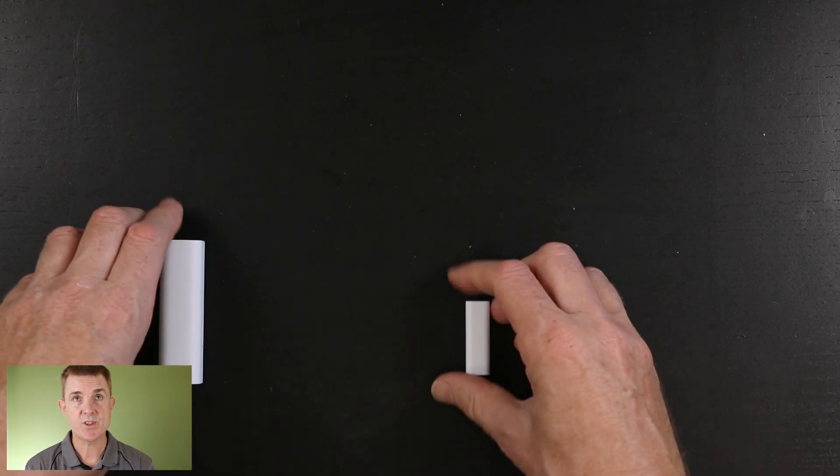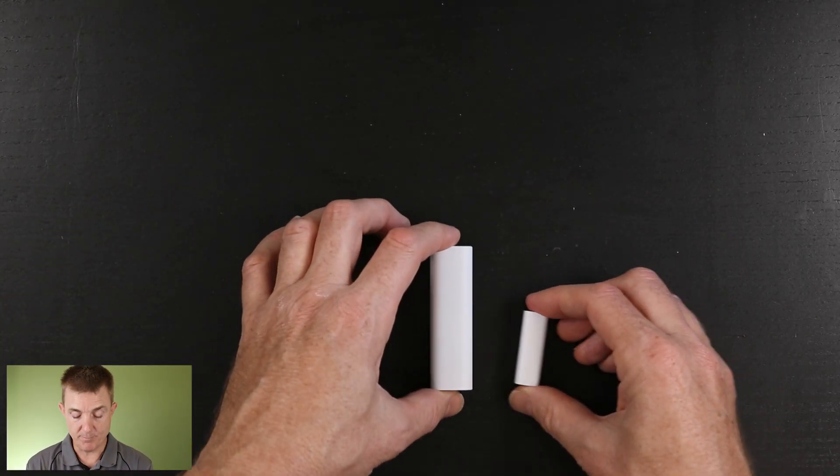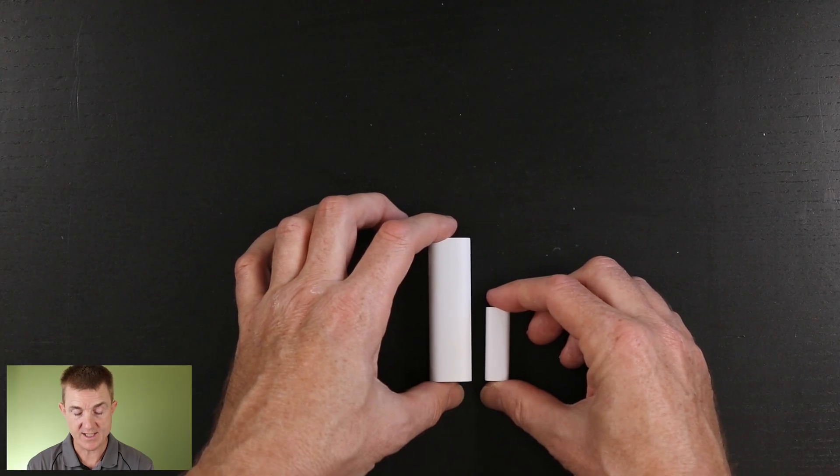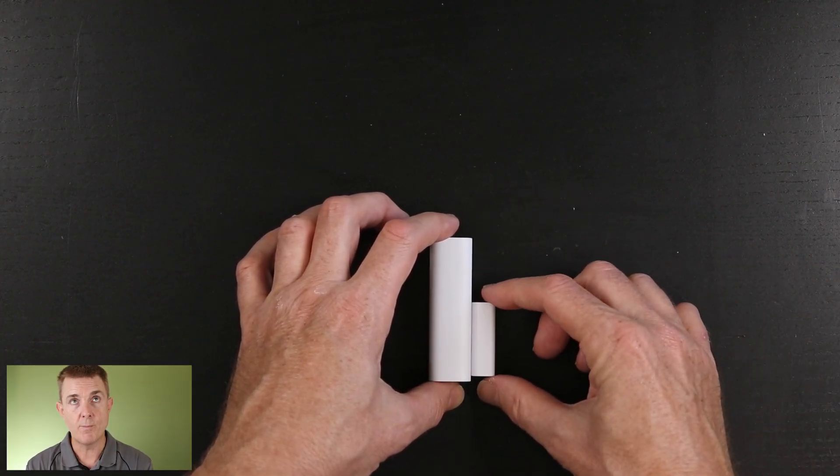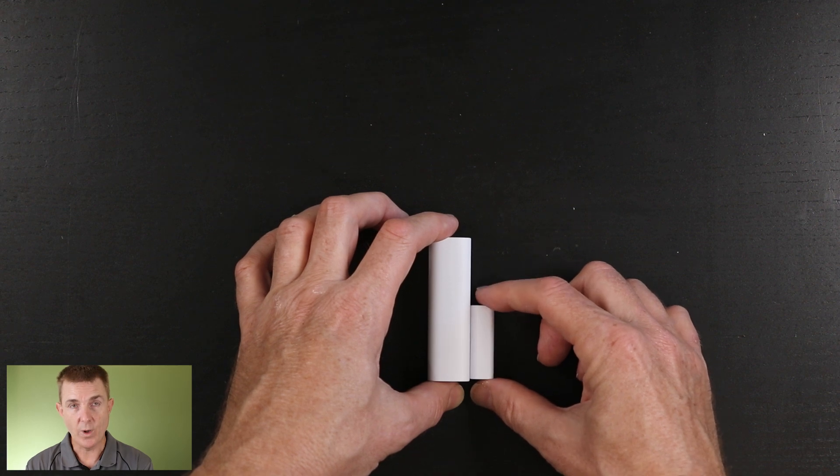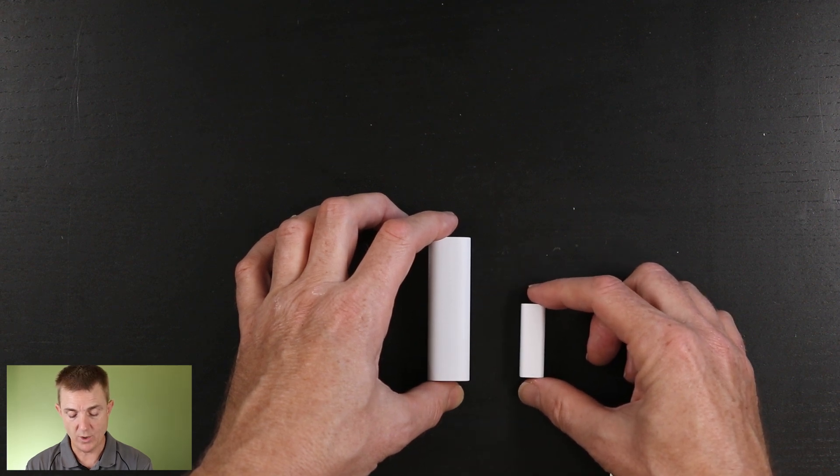This is the actual sensor and this is the main body of it. So obviously these are going to sit together and as this moves backwards and forwards or this way, then it will monitor. As you can see, the magnets in there will actually monitor its distance apart.